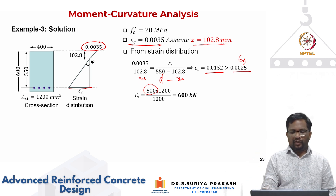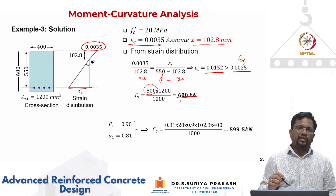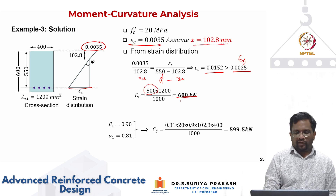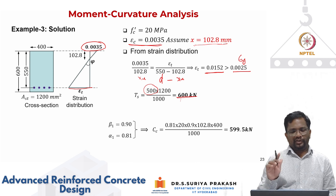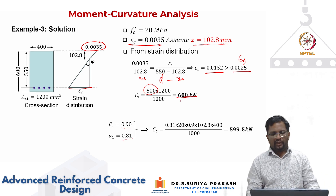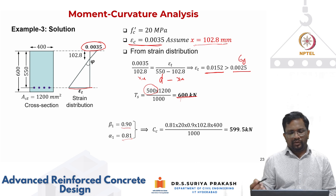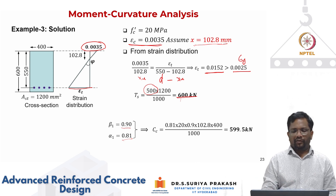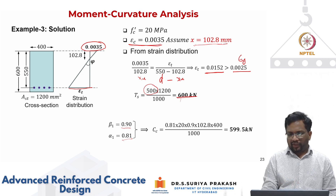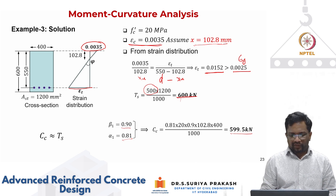When epsilon_t exceeds 0.0025, stress in the steel becomes 500 MPa and remains constant until rupture. So 500 multiplied by 1200 gives a tension force of 600 kN. For the concrete compression force, alpha_1 and beta_1 depend only on epsilon_c. At epsilon_c equal to 0.0035, alpha_1 works out to 0.81 and beta_1 to 0.9. Then C_c equals alpha_1 × f'c × beta_1 × x_u × breadth, giving approximately 599.5 kN — nearly equal to the tension force, so equilibrium is satisfied.